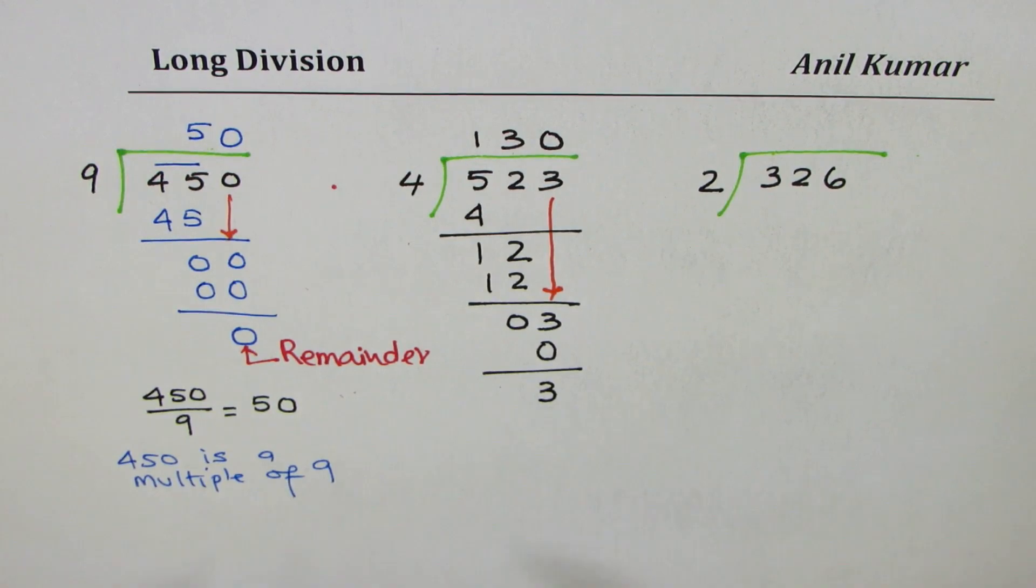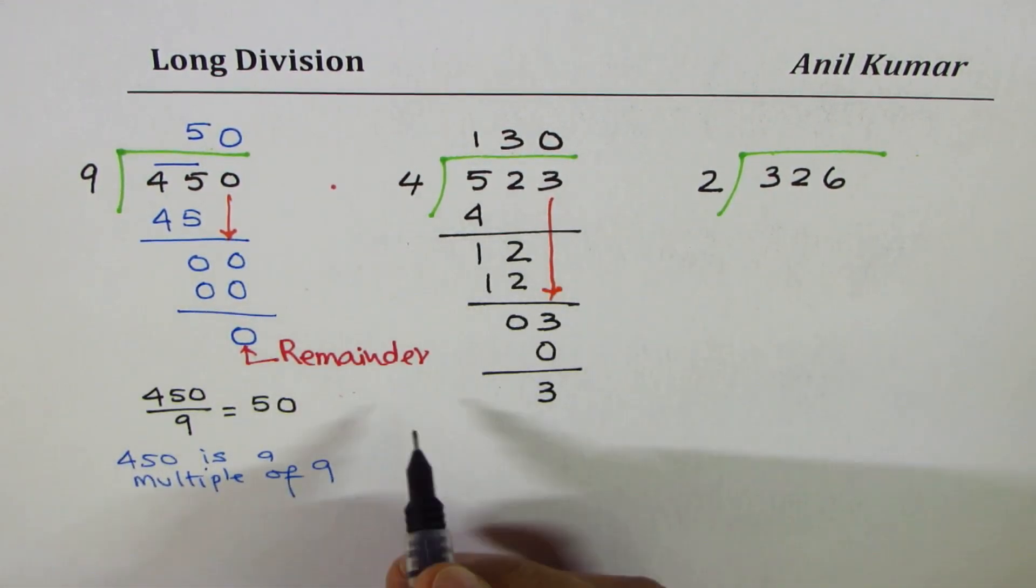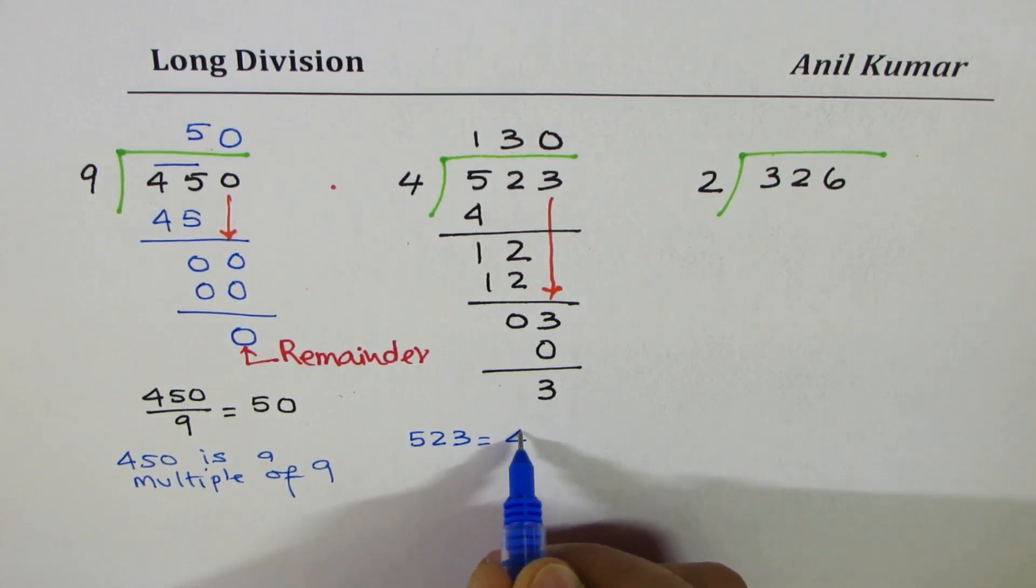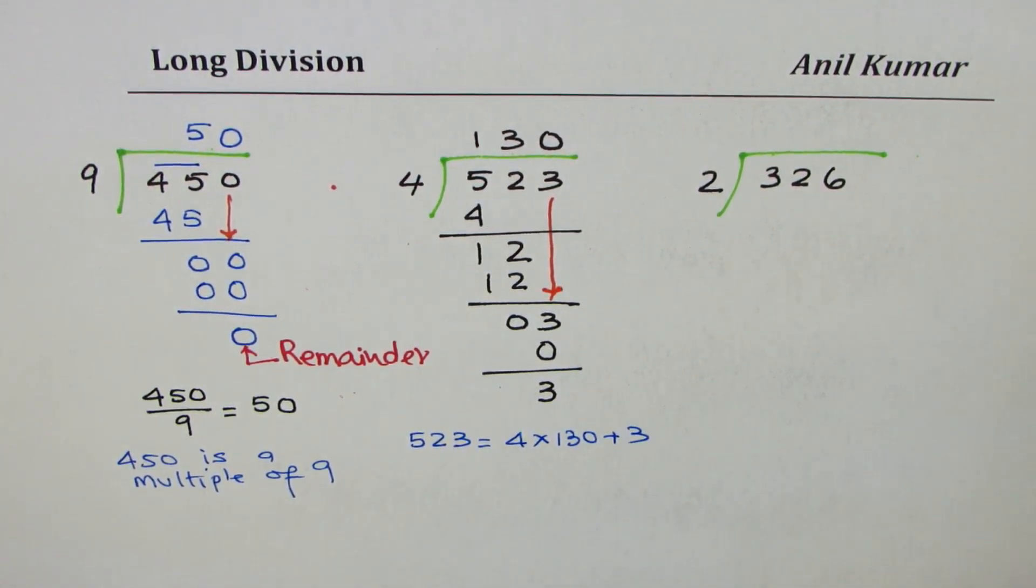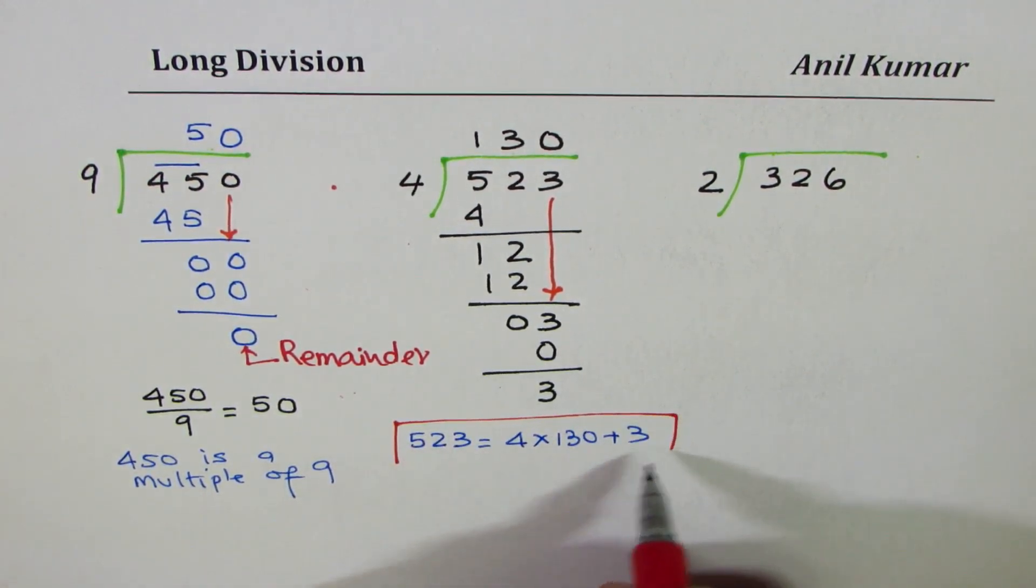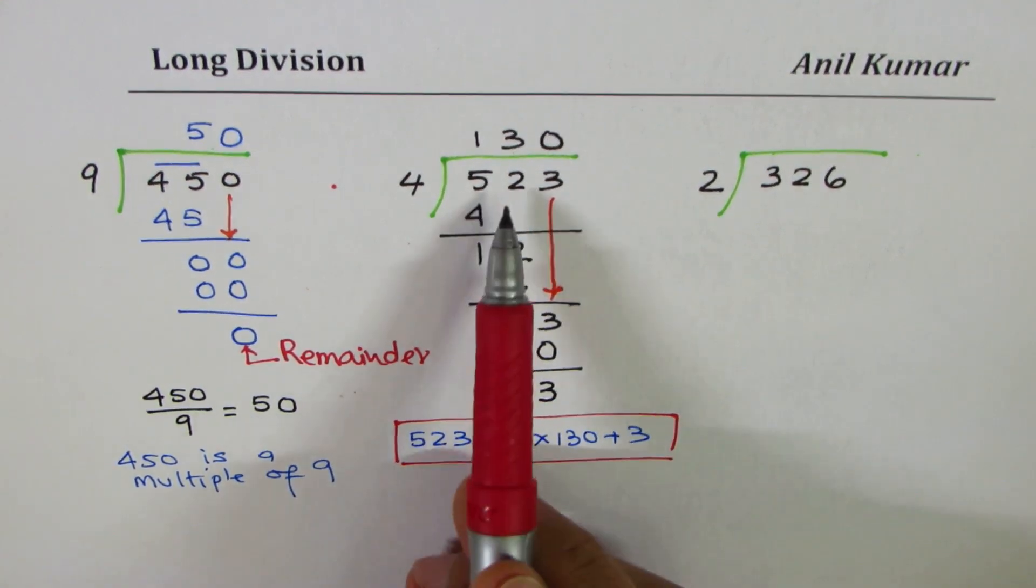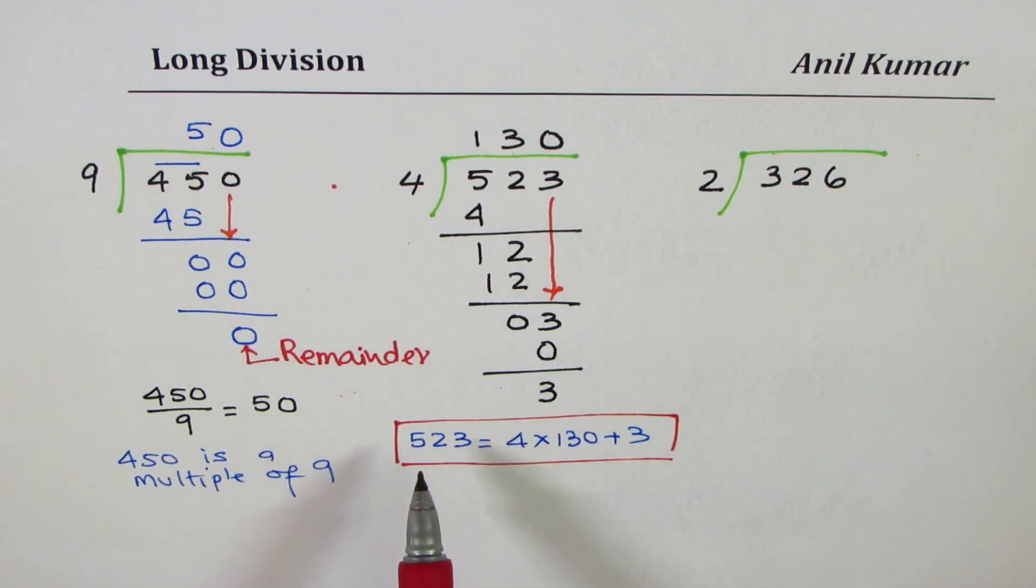That is how it should be done. Another form of division statement is to write it as a multiplication. You could also write your answer as 523 is equal to 4 times 130 plus 3. If you write in this fashion, it is the multiplication form of the division statement. 523 is 4 times 130 plus 3.